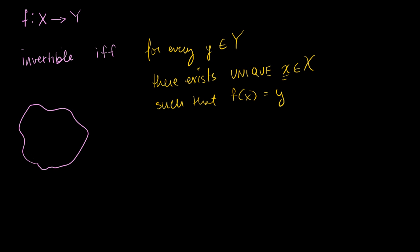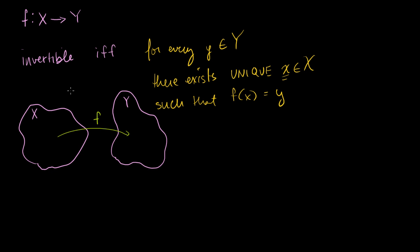So if I take my domain X and my codomain Y, we say that the function f is invertible. Invertibility means there's another function called the inverse that, when composed with f, is like taking the identity on X, or when f is composed with it, it's like taking the identity on Y.